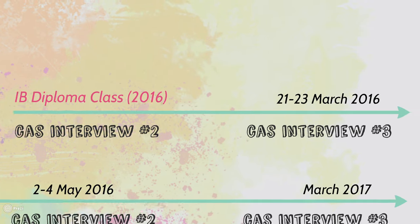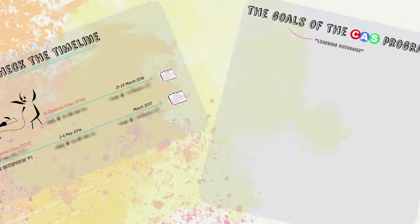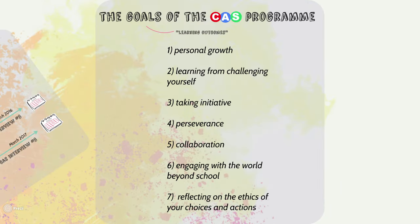Finally, get to know the goals of the CAS program. These are called learning outcomes. Here they are in brief: personal growth, learning from challenging yourself, taking initiative, perseverance, collaboration, engaging with the world beyond school, and reflecting on the ethics of your choices and actions.